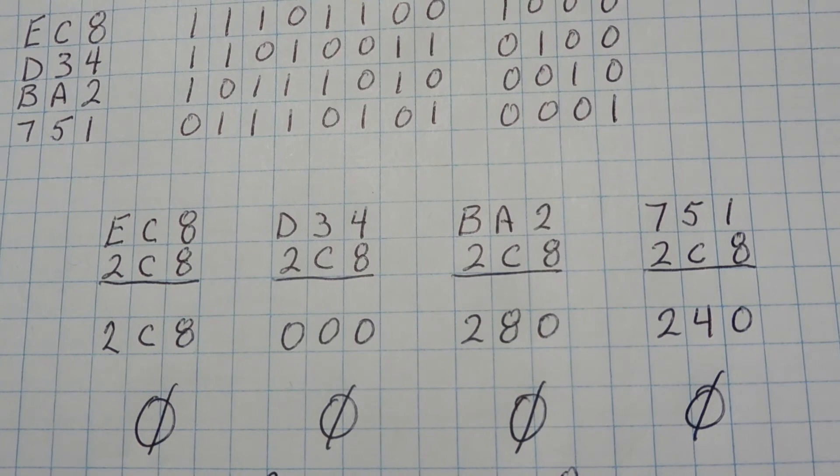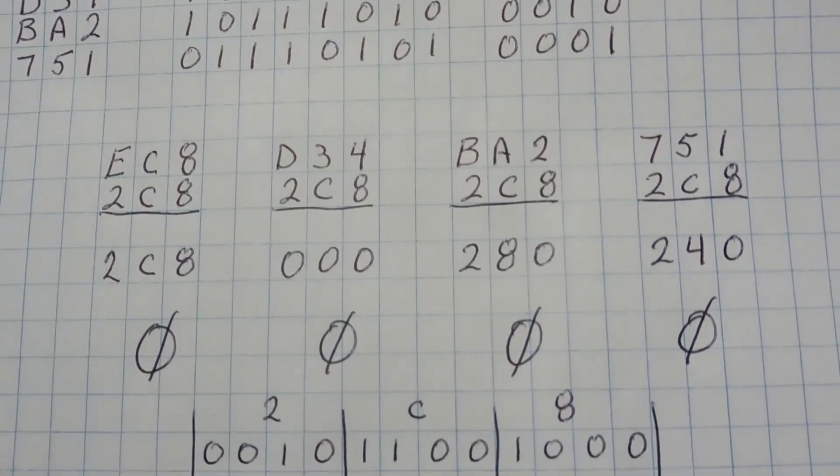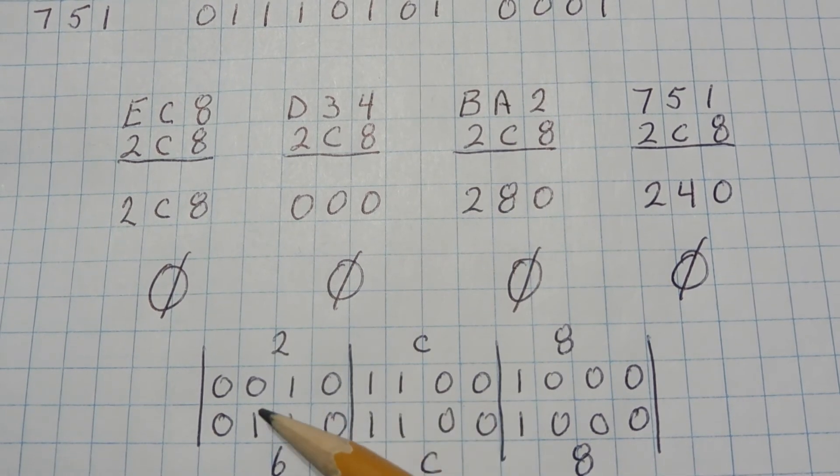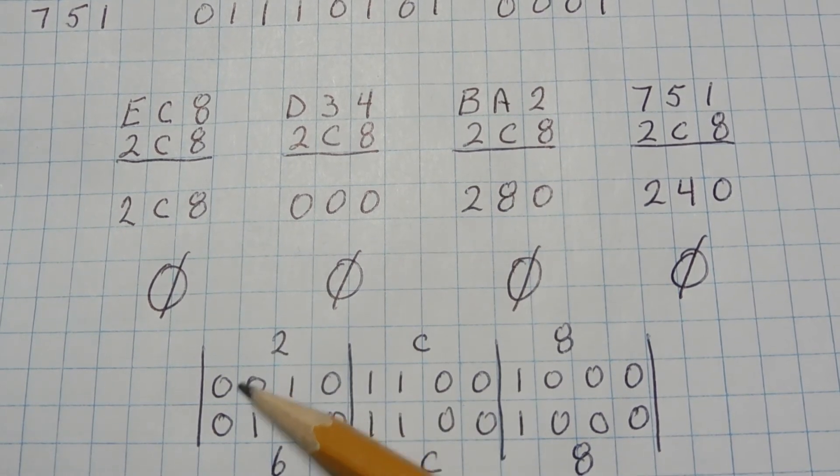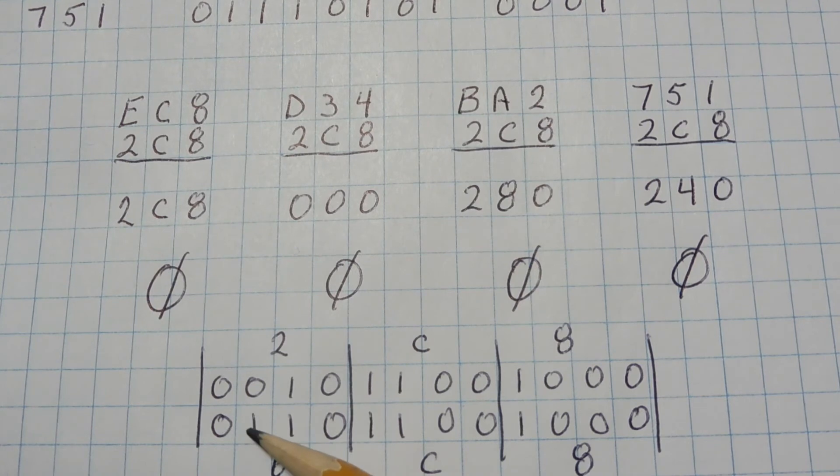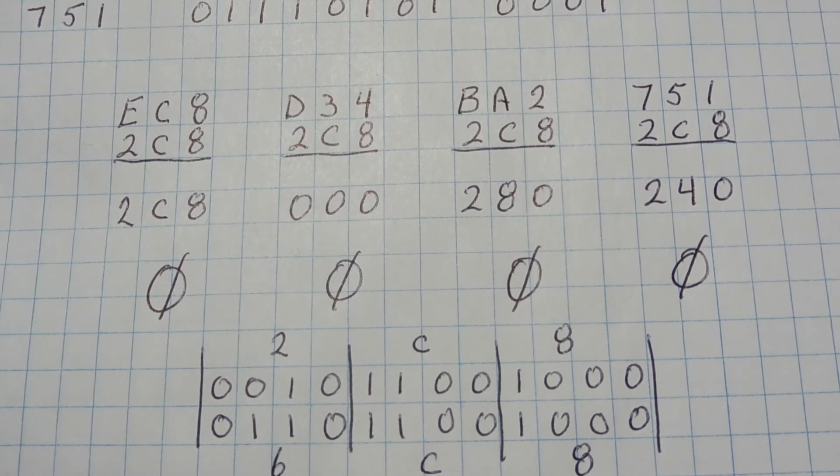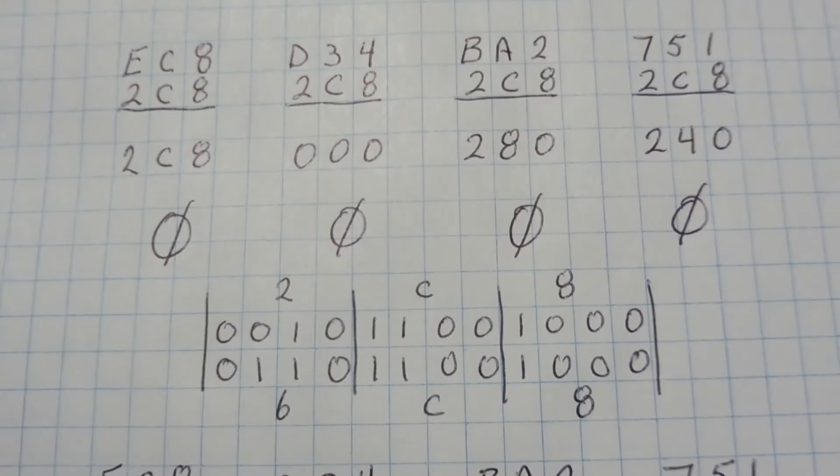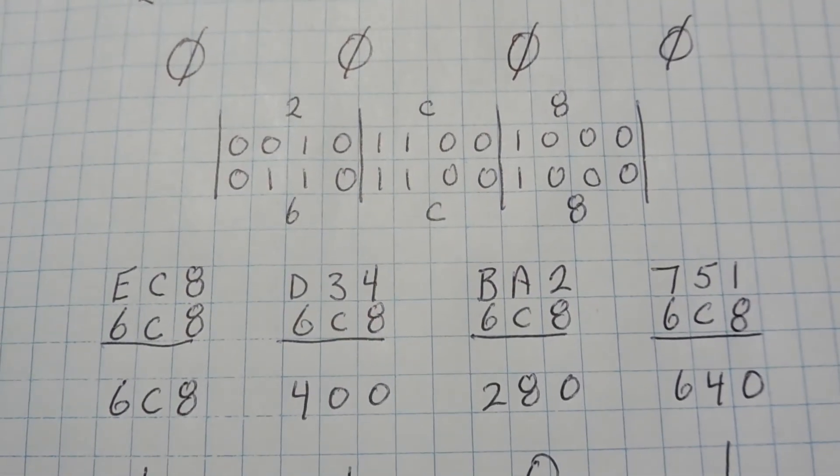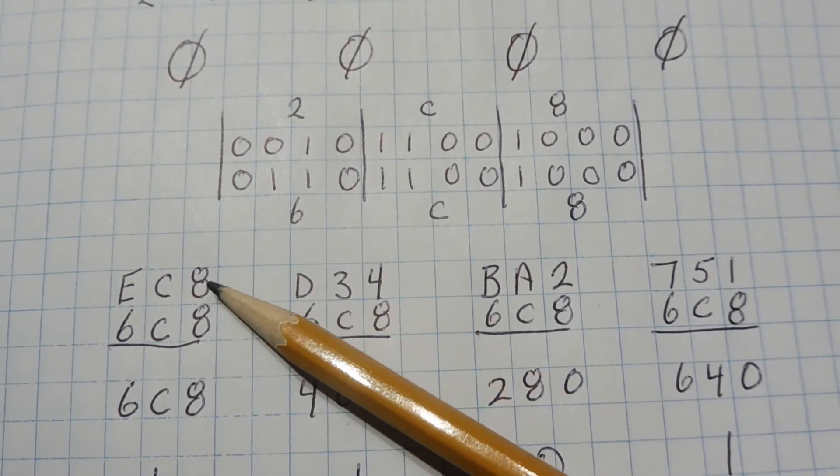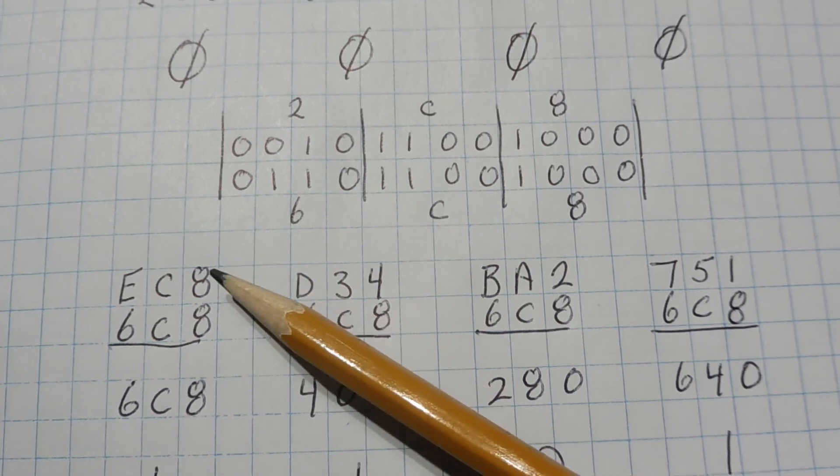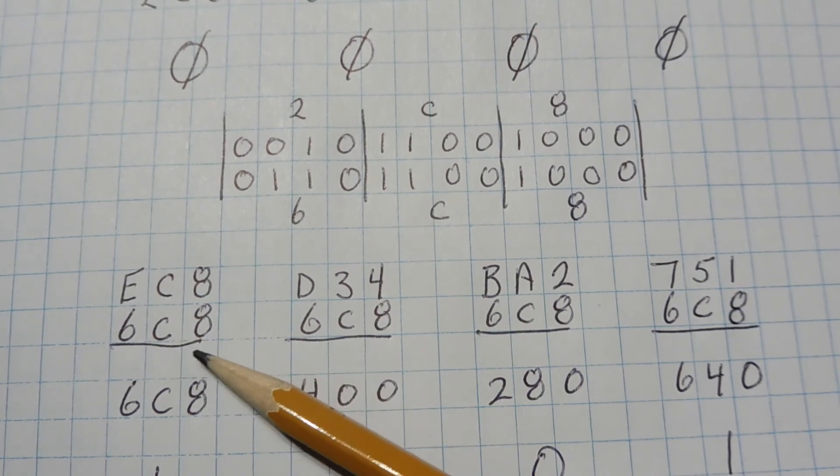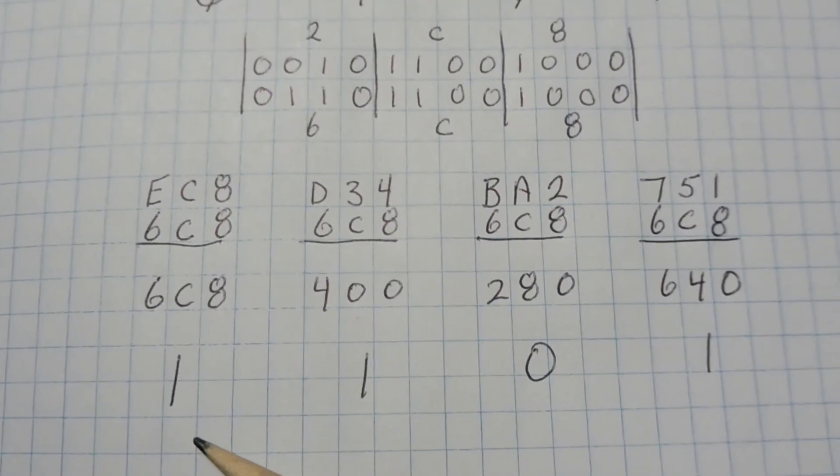So but what happens if we have an error? So here we have 2c8 in binary. Now say this bit here gets changed from a 0 to a 1. That's bit 6. So it will become 6c8 will be the data that we're going to be getting in. So we'll run that through it. We'll run 6c8. So we have our decode Hamming matrix, our 4 values. And we end it with 6c8.